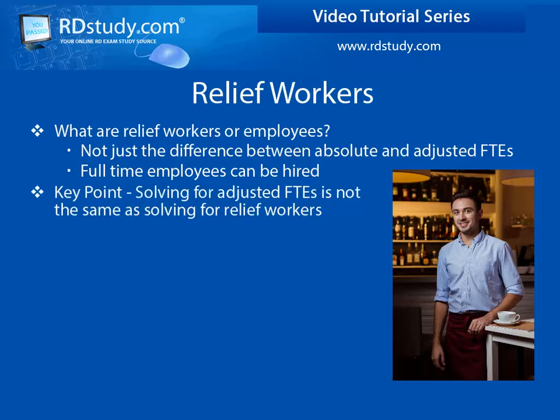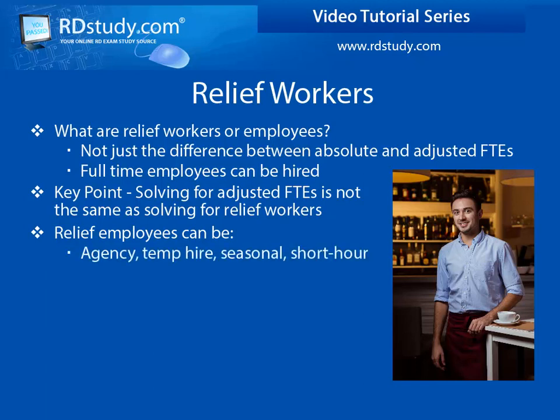Which brings up a key point: when solving for adjusted FTEs, you are not necessarily solving for the number of relief workers, and vice versa. So if relief workers are not just the difference between the absolute and adjusted FTE values, what are they? They can be temp hires, agency workers, seasonal, short-hour, part-time, or even as-needed employees. They are basically not permanent hires and are not considered career employees by the organization.